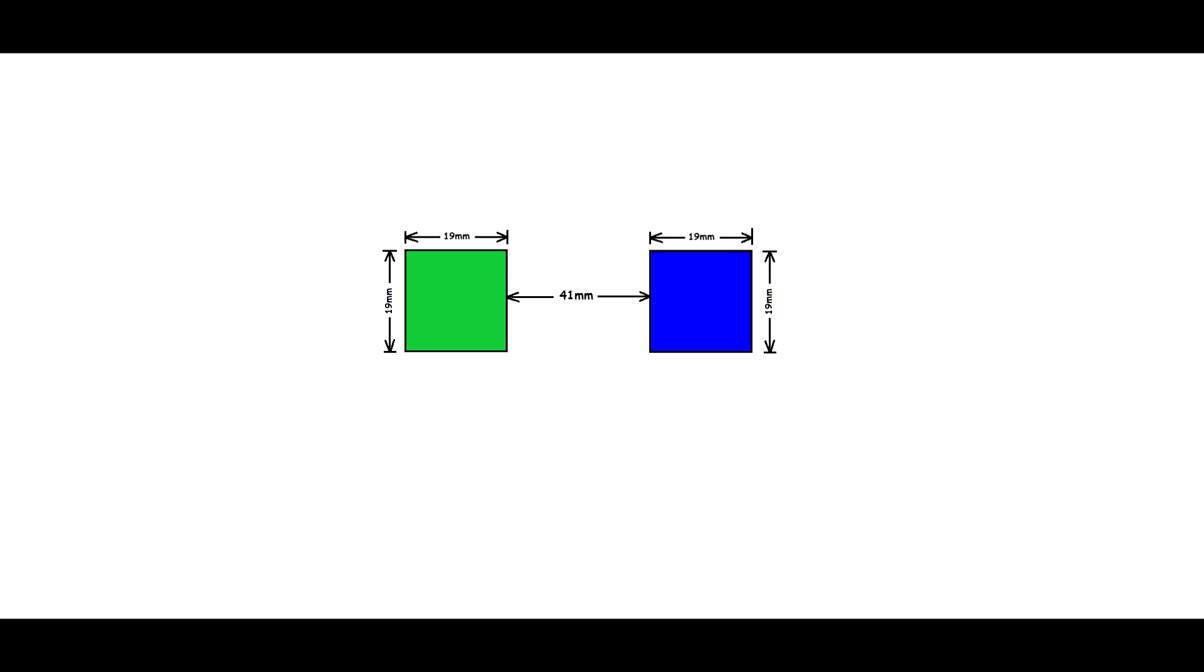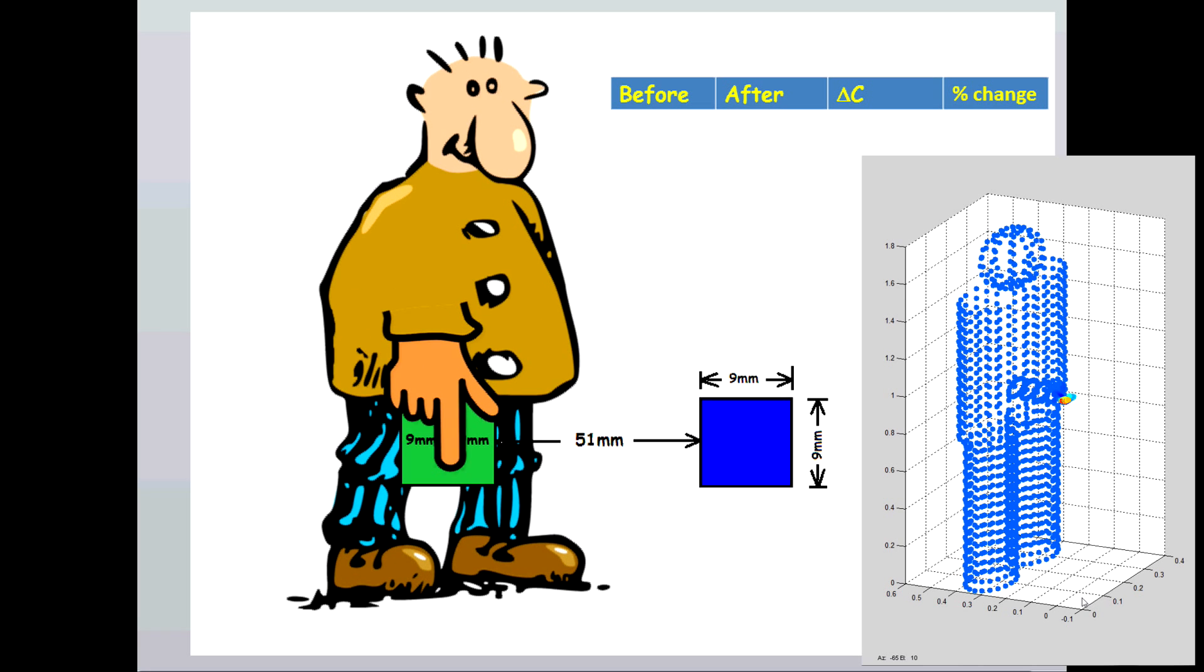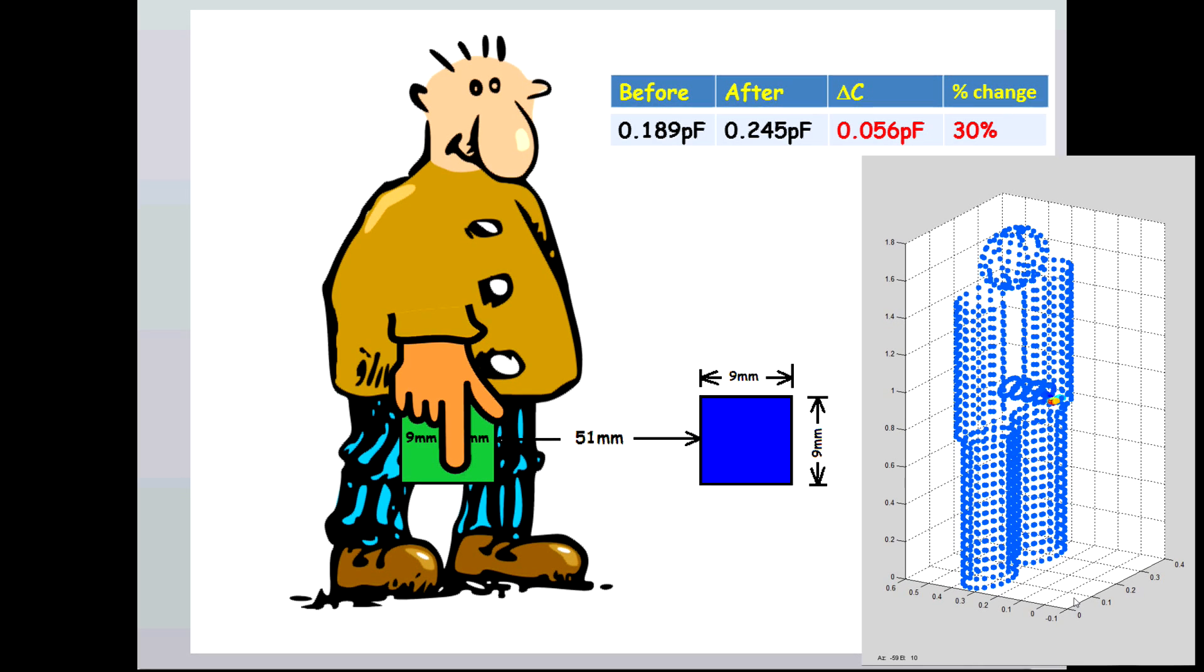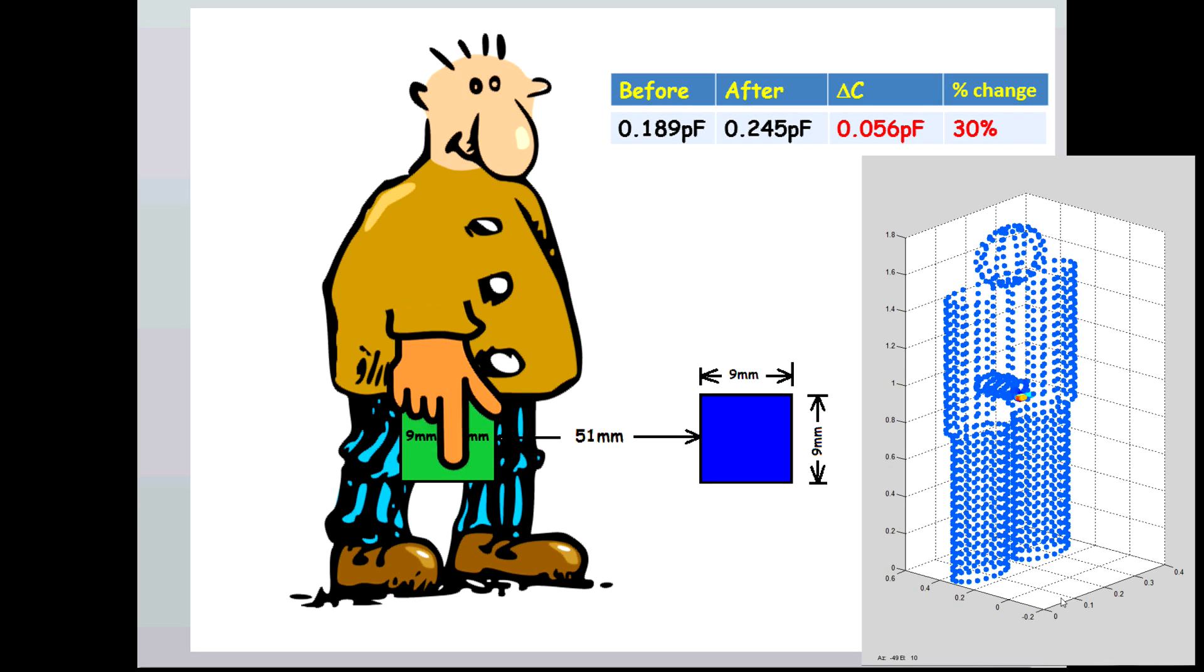We can also do numerical experiments to study the effects of antenna's geometry on the sensitivity to external influence. For a human touching the antenna configuration as shown, the capacitance increased by 0.056 pF, amounts to 30% increase.